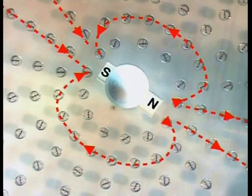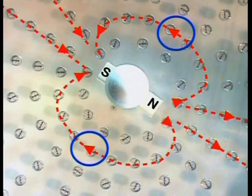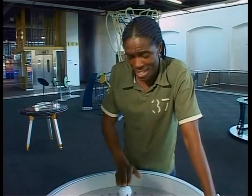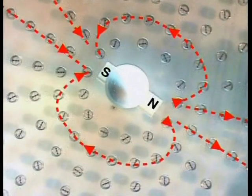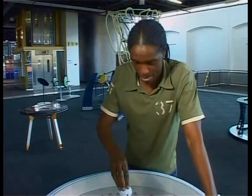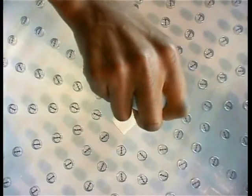Now have a look at the compasses that have been placed between the ends of the magnet. Here the needles are pointing away from the north end and towards the south end. Now would you believe me if I told you that it's the big magnet in the middle of the display that's affecting all these compasses around it? Now I'm going to turn the magnet through 90 degrees. Can you predict what will happen to each of the compass needles?